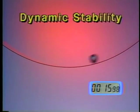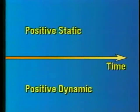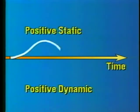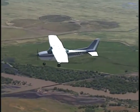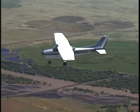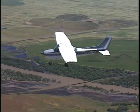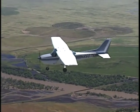How an object responds over time, as opposed to its initial reaction, is called dynamic stability. An airplane with both positive static and positive dynamic stability does not immediately return to its original attitude after displacement. Generally, it goes through a series of progressively smaller oscillations. Since an inherently stable platform is highly desirable, a training aircraft is normally designed to exhibit both positive static and dynamic stability.